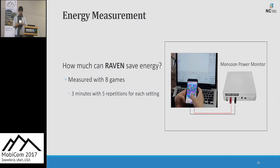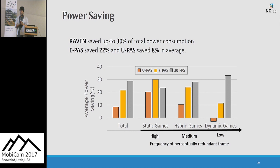To see the power-saving effect, we measured the power consumption of eight games. Laban successfully saved energy up to 30 percent. On average, EPath saved 22 percent and UPath saved 8 percent of energy. But in dynamic games, EPath did not save energy, because EPath did not skip frames to prevent user experience degradation.